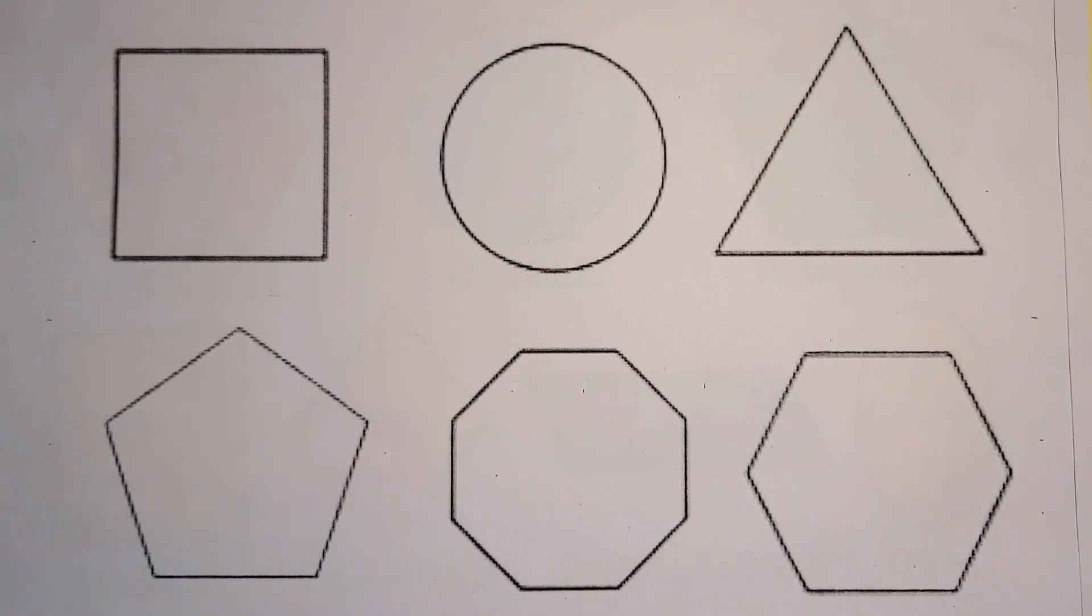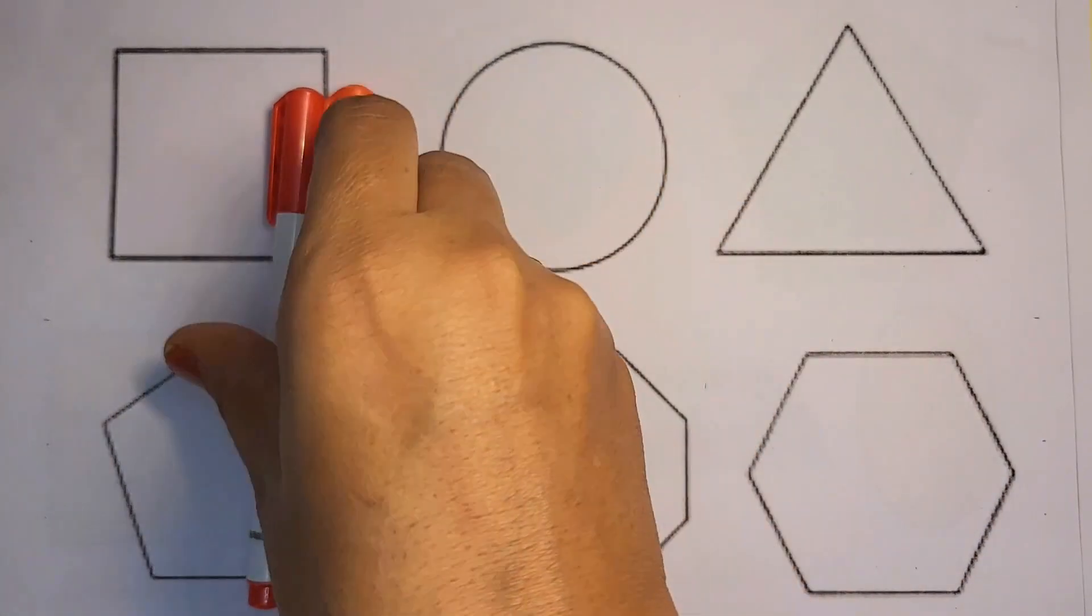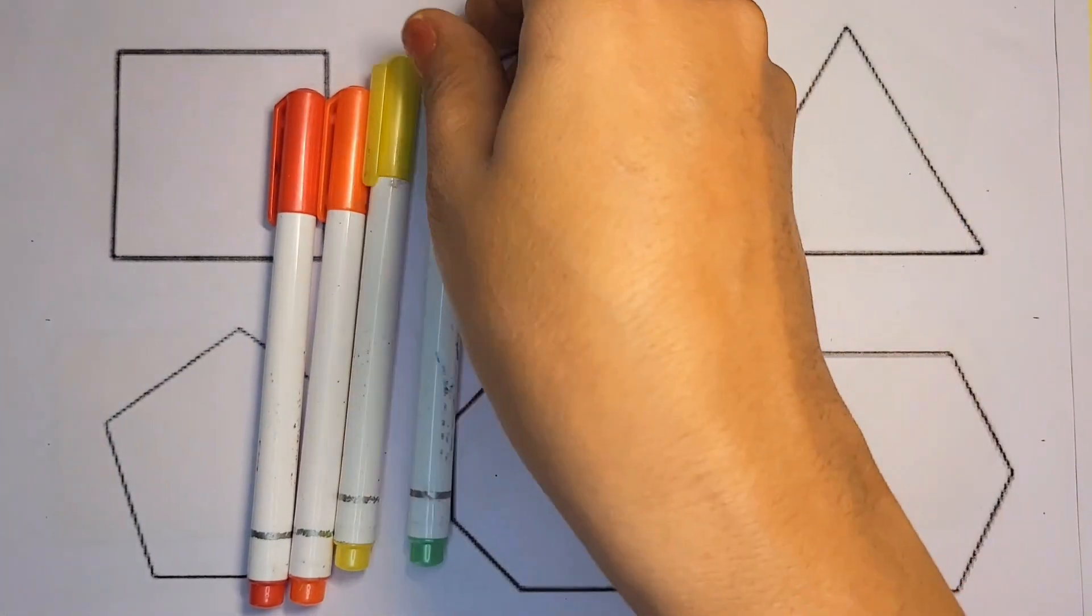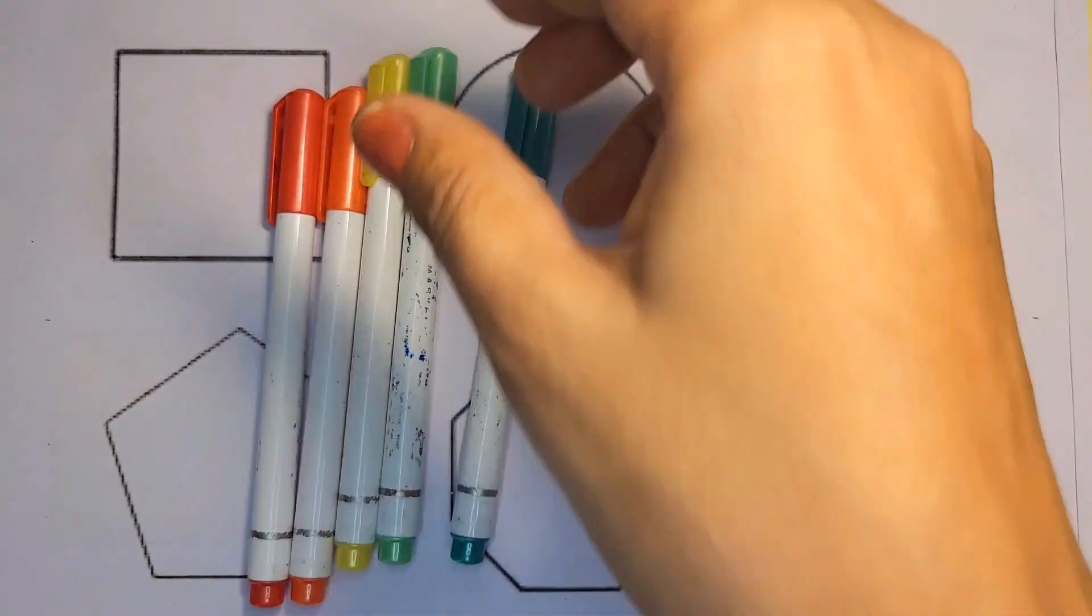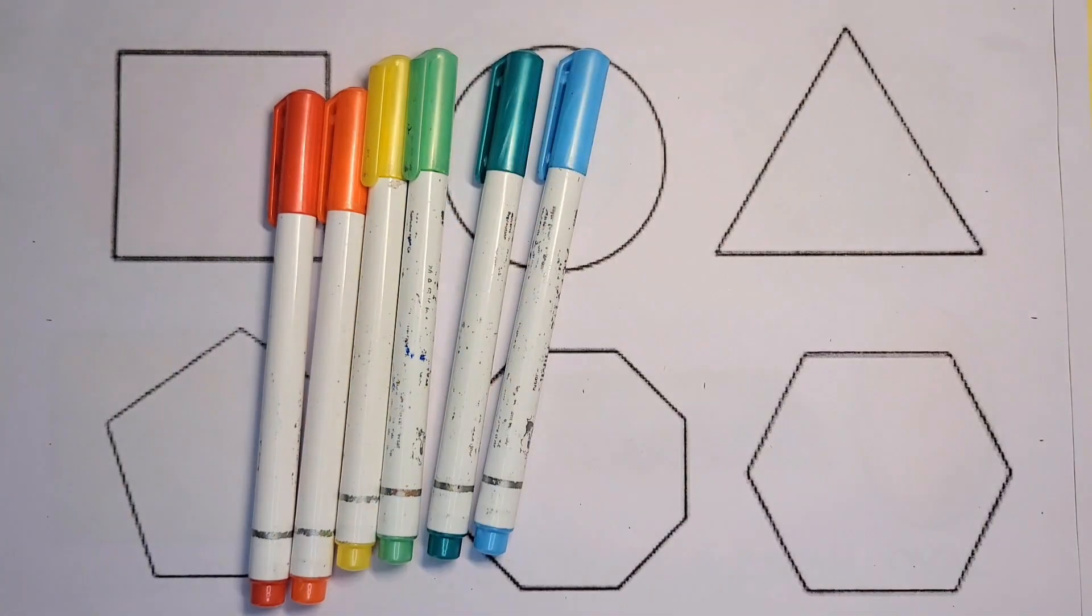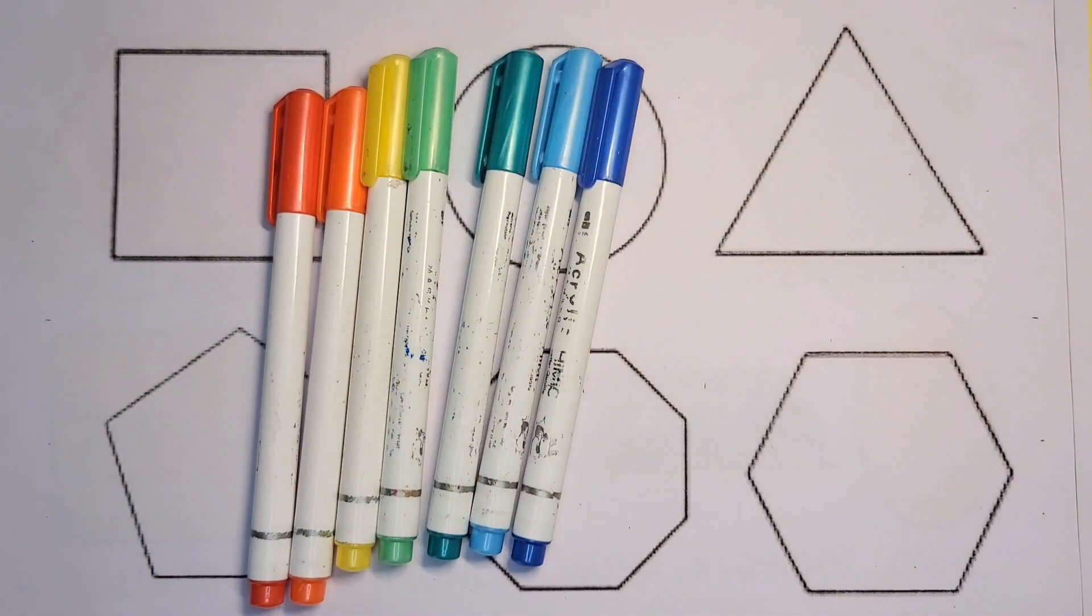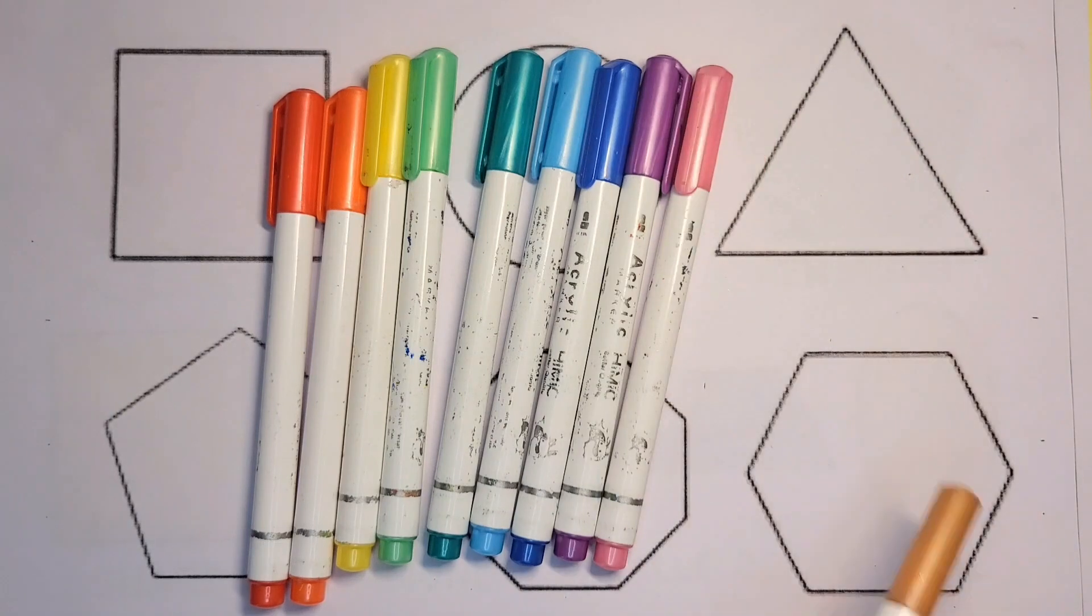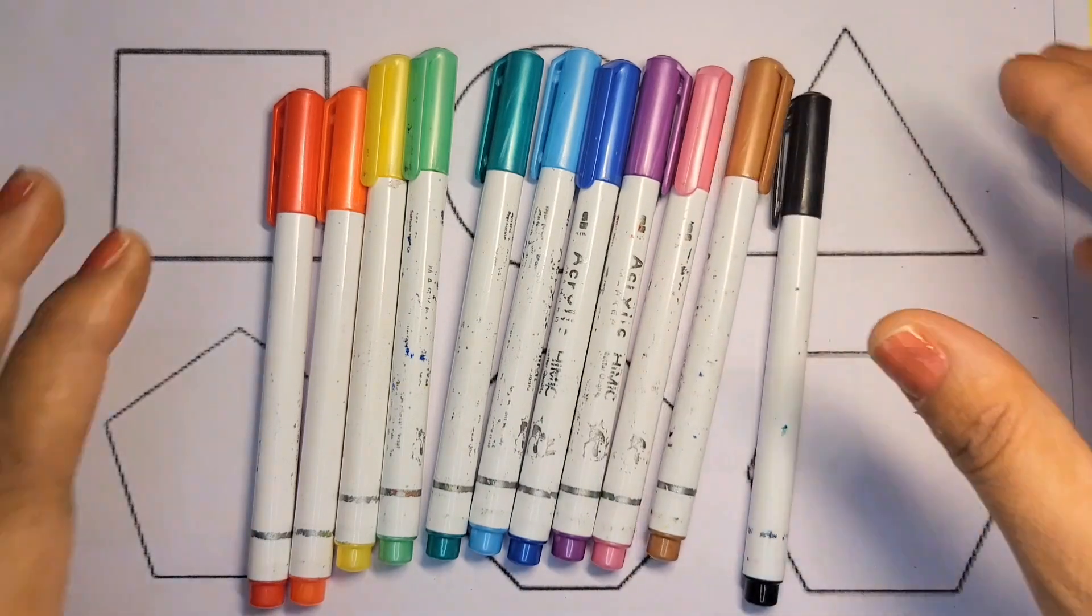Let's start. Learn color. Red color, orange color, yellow color, green color, dark green color, blue color, dark blue color, purple color, pink color, brown color, black color.